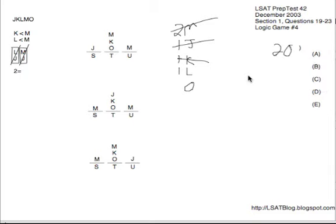Next, number 20, a general must-be-true question. A, J does more than L. No, J and L are each doing exactly one, so A is eliminated. M does more than J. Yes, we know M is doing two, J is doing one. This is our answer for number 20.